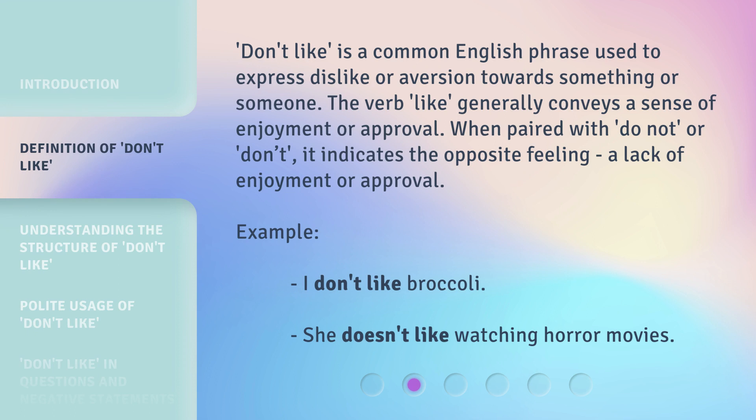"Don't like" is a common English phrase used to express dislike or aversion towards something or someone. The verb "like" generally conveys a sense of enjoyment or approval. When paired with "do not" or "don't", it indicates the opposite feeling — a lack of enjoyment or approval. For example: "I don't like broccoli." "She doesn't like watching horror movies."